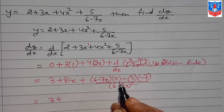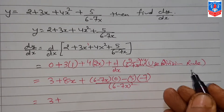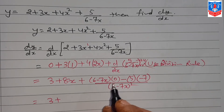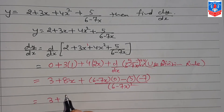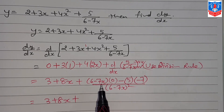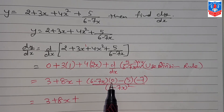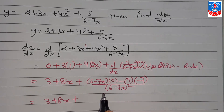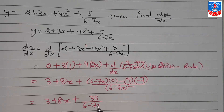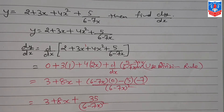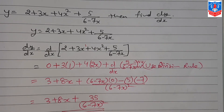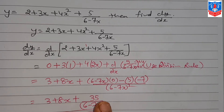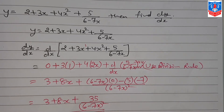You can do this separately and then substitute the final answer — no problem. (6-7x) multiplied by 0 gives 0, and 5 times -7 gives -35, but the minus sign makes it +35. So the derivative of the fractional term is 35/(6-7x)². Therefore, the final answer is dy/dx = 3 + 8x + 35/(6-7x)².